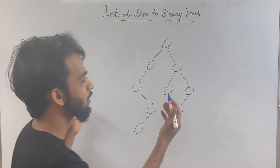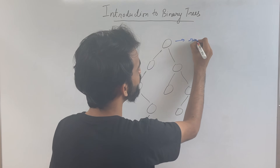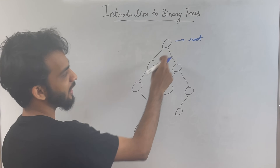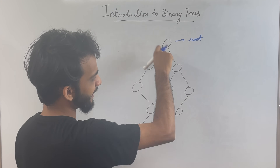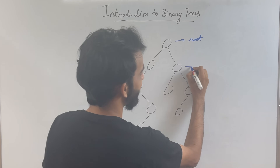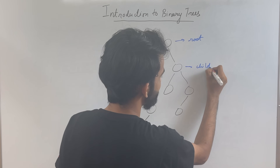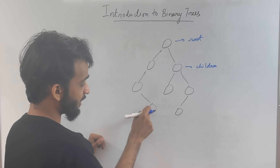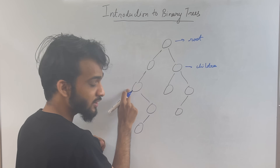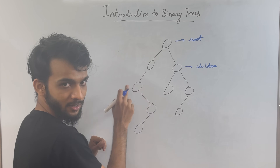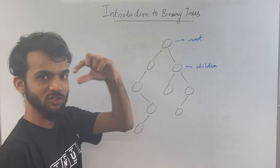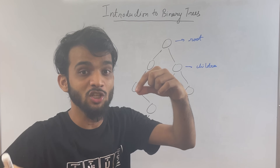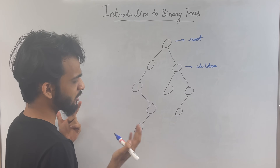Whichever node is the head or starting point — that is known as the root of the tree. It's the starting point. If a node has a couple of nodes beneath it, those are called the children. For example, this node is the child of this node, and this node is the child of this node. Whatever we have beneath a node — those are its children.